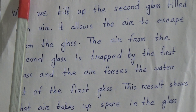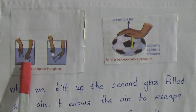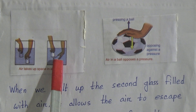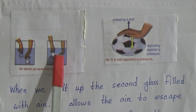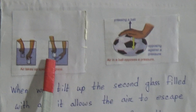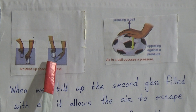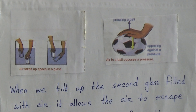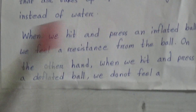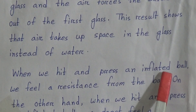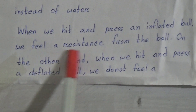At first, the first glass was full of water and the second glass was full of air. When the second glass is tilted toward the first glass, the air from the second glass goes into the first glass and takes up the whole space. By this experiment we have come to know that air takes up space in the glass instead of water.